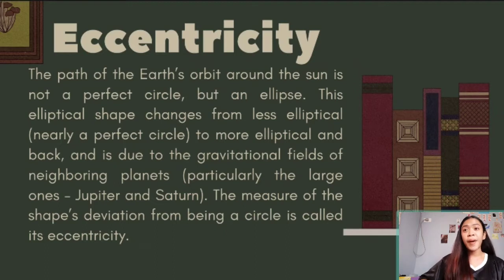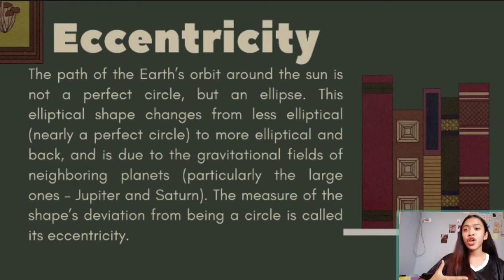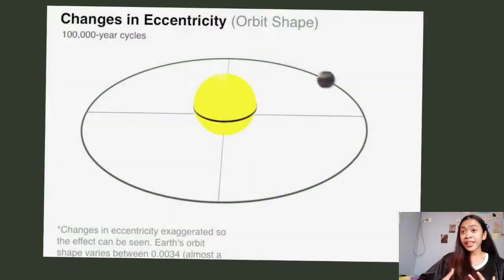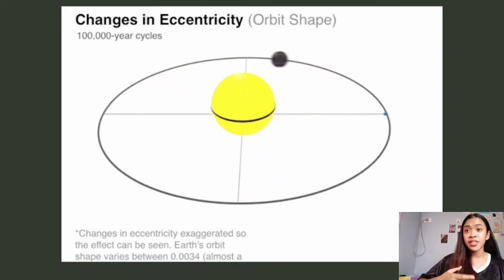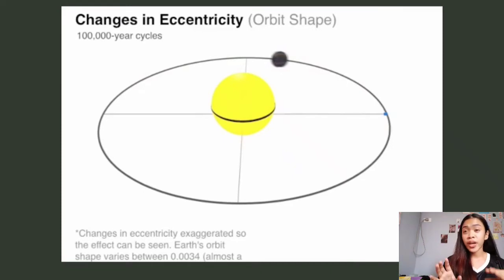Regarding eccentricity: the path of the Earth's orbit around the Sun is not a perfect circle, but an ellipse. This elliptical shape changes from less elliptical — nearly a perfect circle — to more elliptical and back, due to the gravitational fields of neighboring planets, particularly Jupiter and Saturn. The measure of a shape's deviation from being a circle is called eccentricity; the larger the eccentricity, the greater its deviation from a circle. The Earth's orbit undergoes a cyclical change from less eccentric to more eccentric and back, and one complete cycle lasts about 100,000 years. Eccentricity is the reason why our seasons are slightly different lengths, with summers in the northern hemisphere currently about 4.5 days longer than winters, and springs about 3 days longer than autumns.